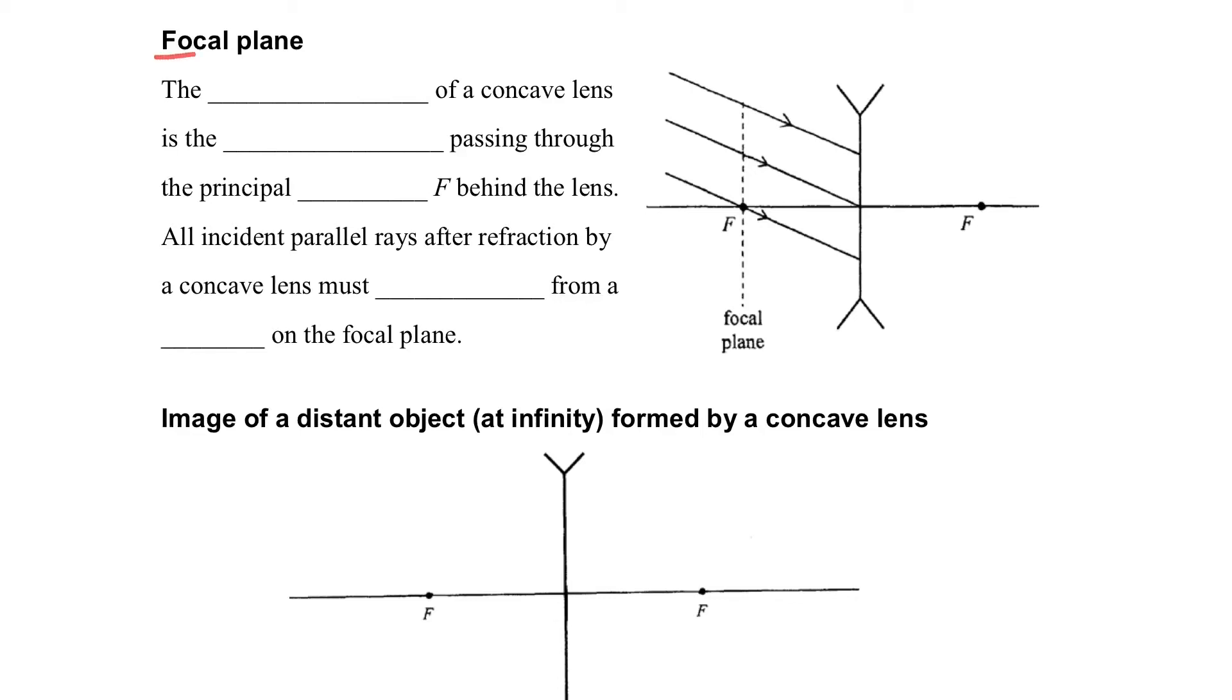This part we will talk about the focal plane of the concave lens. The focal plane of a concave lens. What is the focal plane? Focal plane is actually a vertical plane that passes through the principal focus of the lens. Actually it's an imaginary plane.